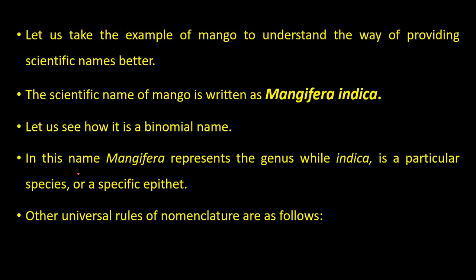NCERT gives examples to help understand. The genus is represented by the generic epithet and the species is represented by the specific epithet. First is genus, second is species — this is binomial nomenclature.